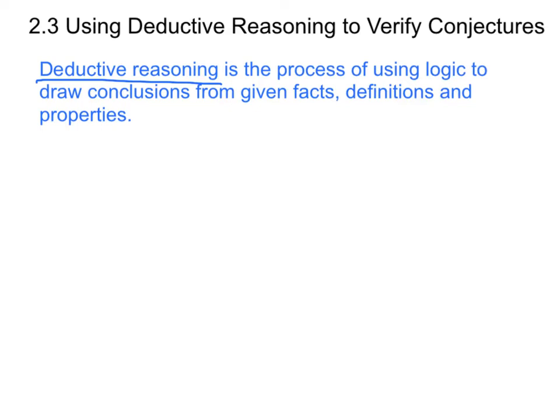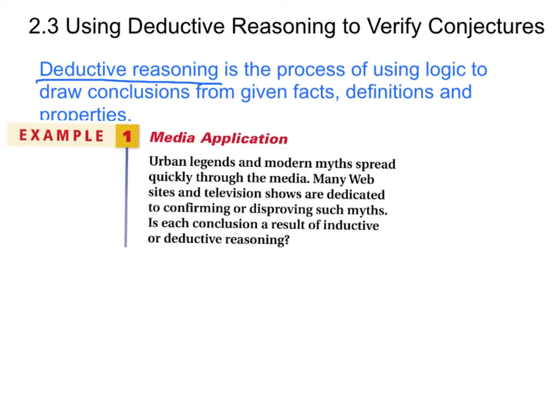The next example I'm going to give you has a lot of words. You don't need to write it down — if you just want to make a note, it's on page 88 of your book. Example 1: Urban legends and modern myths spread quickly through the media. Many websites and television shows are dedicated to confirming or disproving such myths. Is each conclusion a result of inductive or deductive reasoning?